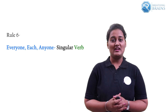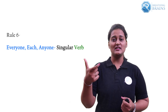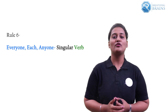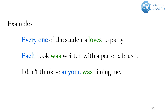Rule number six: whenever your sentence begins or contains 'everyone,' 'each,' or 'anyone,' you use the singular form of verb. For example, 'Everyone of the students loves to party' — sentence starts with 'everyone,' so we use the singular verb 'loves.' 'Each book was written with a pen or a brush' — starts with 'each,' so we use 'was.' 'I don't think anyone was timing me' — 'anyone' is contained in the sentence, so we use the singular verb 'was.'